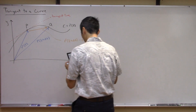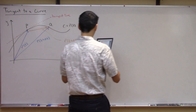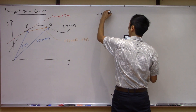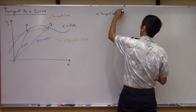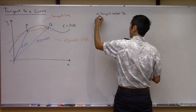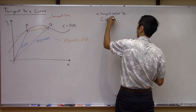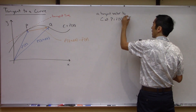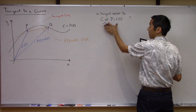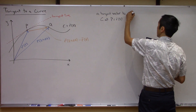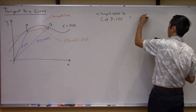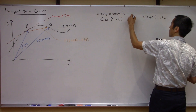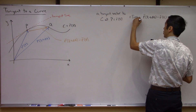So what we can say here is that a tangent vector to the curve C at point P — where P equals R at T — is equal to the limit as delta T goes to zero of R of T plus delta T minus R of T.